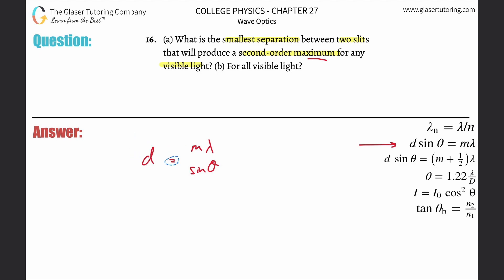So it tells us second-order max, therefore m is two. So plug in two. For the wavelength, well what wavelength? It says for any visible light.